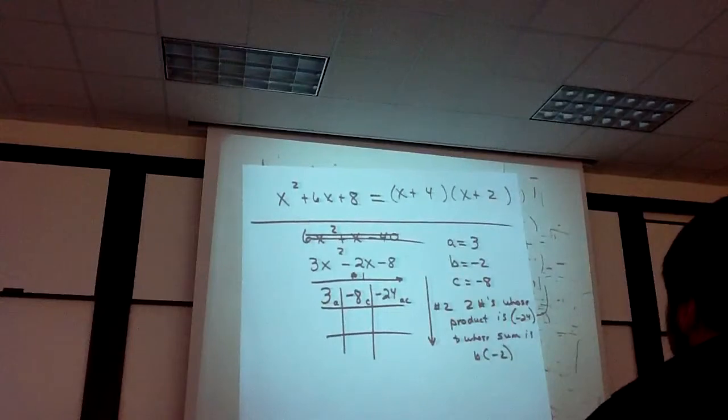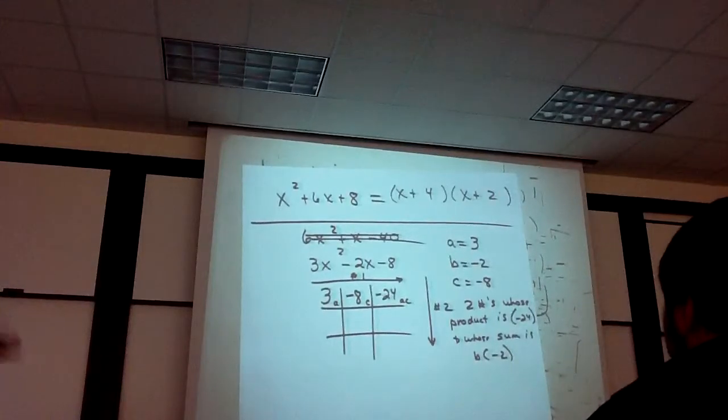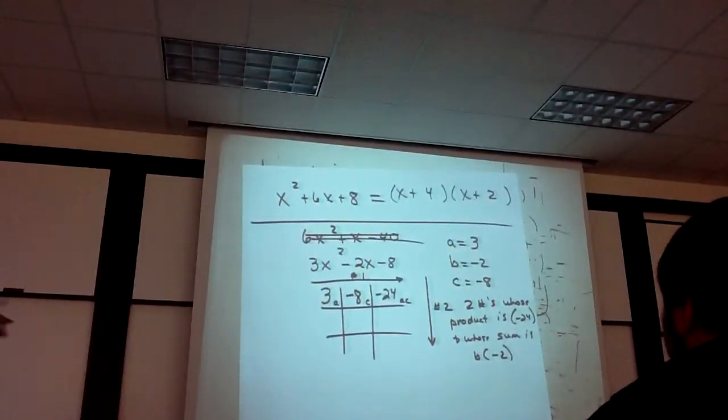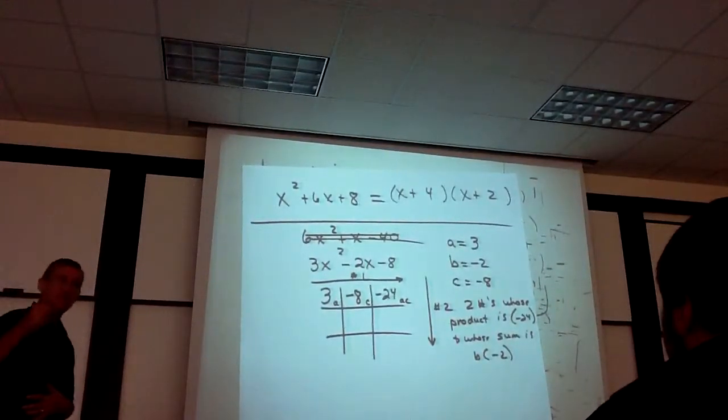Negative 6 and positive 4, right? Two numbers whose product is negative 24. Got some options there: 3 and 8, 4 and 6. But you add them together to get negative 2. Negative 6 and positive 4.